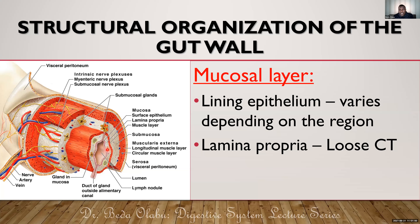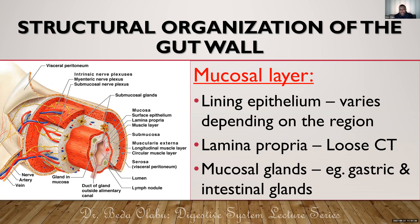However, the glands in the mucosa of the stomach are the most numerous — we call them gastric glands. The glands of the intestines, whether small or large, are known as the crypts of Lieberkühn, also called the intestinal glands. Remember that the lamina propria is a loose connective tissue that contains mucosal glands, but their proportion varies depending on the part of the GIT.